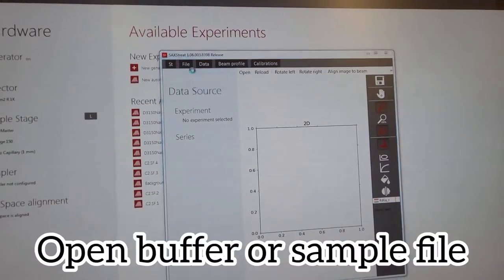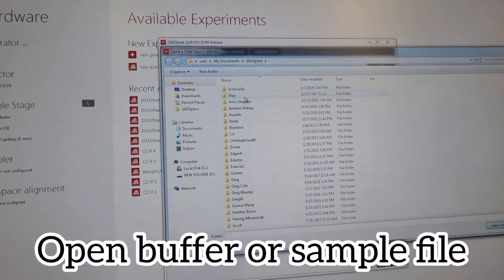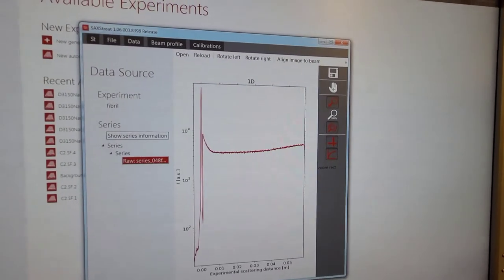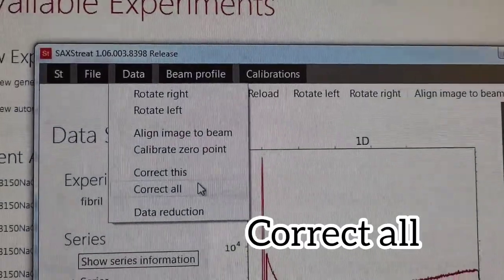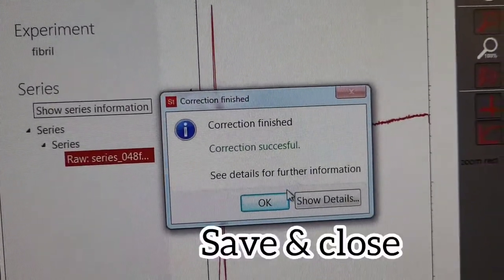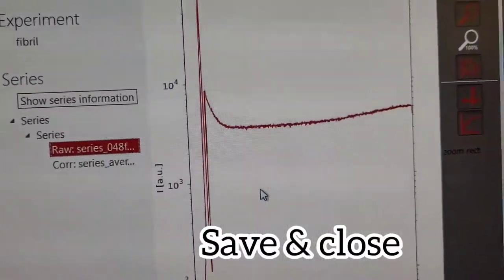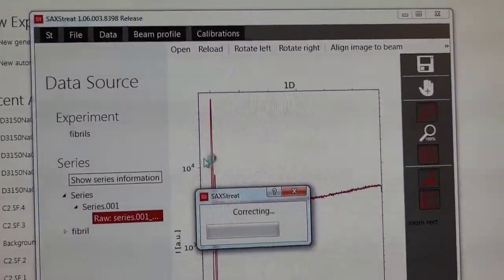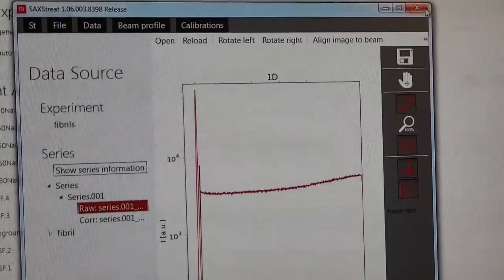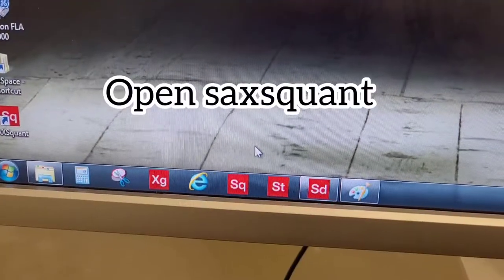After you run both buffer and sample you want to go to the SAXStreat software. You go there, do it for both. You do a correct all and save. That's simple. You just do this for the buffer and sample. You have a file created. I think it's a PDH file for both.